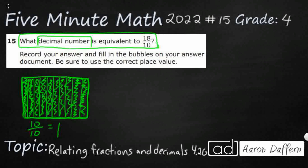Any fraction that has the same numerator and denominator is equal to one. Two-halves, three-thirds, four-fourths, five-fifths, six-sixths — all equal to one, because you've shaded in the whole thing. One hundred one-hundredths, one thousand one-thousandths — all equal to one. But that's only ten-tenths; I need eighteen-tenths.